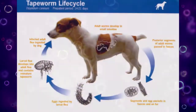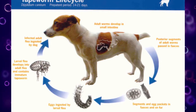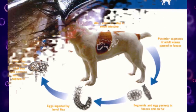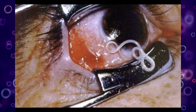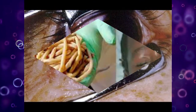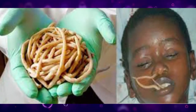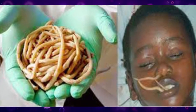Every free-living species has its own unique species of parasite, including humans, such that the number of parasitic species greatly exceeds the number of free-living species.